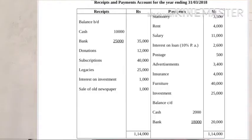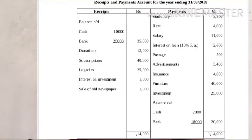The Receipt and Payment account is given with additional information. The cash balance is 10,000 and bank balance is 25,000. Donation is 12,000 — note it is a receipt. Subscription is 40,000, legacy is 25,000, interest on investment is 1,000, and sale of old newspaper is 1,000.